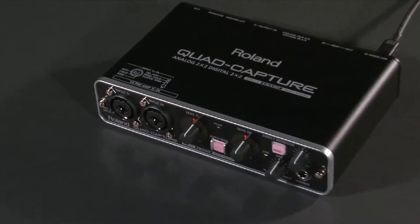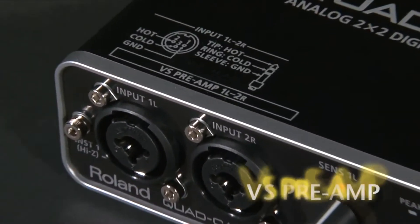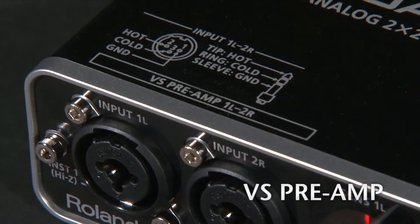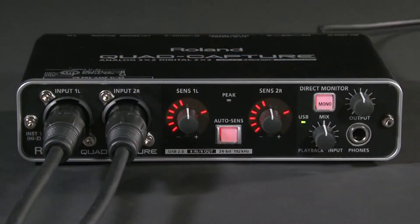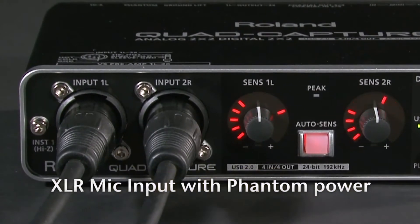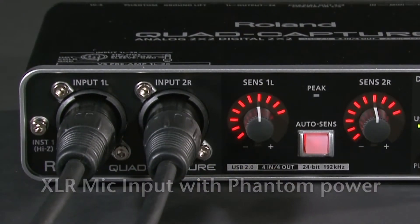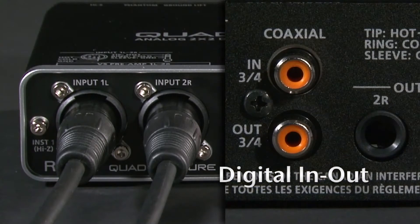Quad Capture boasts two premium-grade digitally controlled VS preamp mic preamps, made from the same high-grade components as the VStudio 700. The two XLR combo jacks are equipped with phantom power and digital in-out on the rear panel.